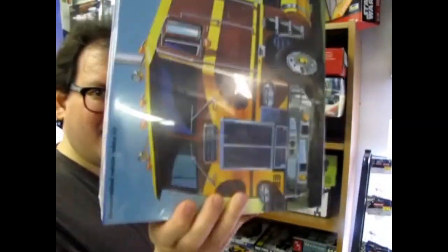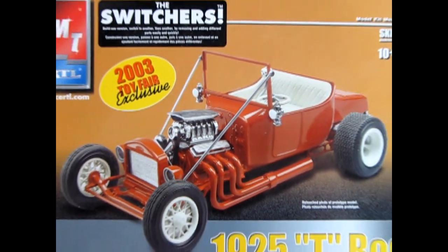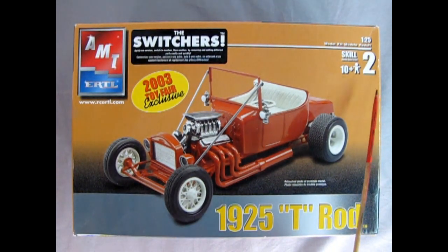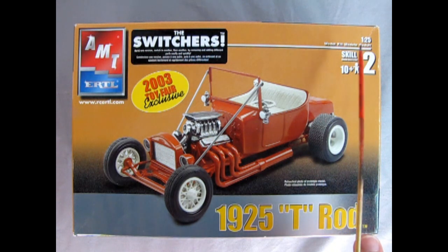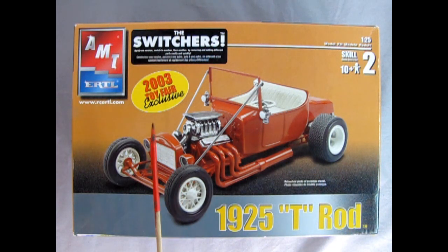What's in the box? Here we have a very special kit. This is the AMT Ertl's The Switchers 1925 T-Rod, a skill level 2 kit for ages 10 and up molded in 1/25th scale. This is the 2003 Toy Fair exclusive.